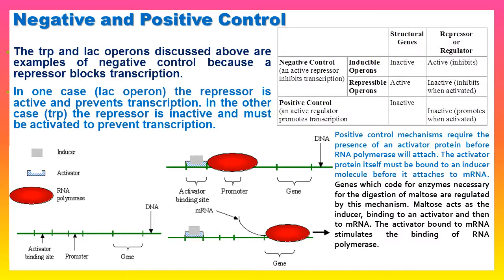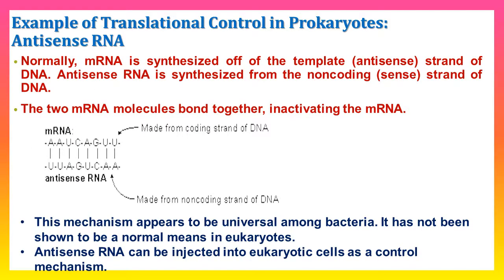The trp and lac operons are examples of negative control because a repressor blocks transcription. In the lac operon, the repressor is active and prevents transcription. In the trp operon, the repressor is inactive and must be activated to prevent transcription. Positive control mechanisms require the presence of an activator protein before RNA polymerase will attach. The activator protein itself must be bound to an inducer molecule before it attaches to the gene. Genes coding for enzymes necessary for the digestion of maltose are regulated by positive control: maltose acts as an inducer, binding to the activator and then to the DNA, stimulating the binding of RNA polymerase.